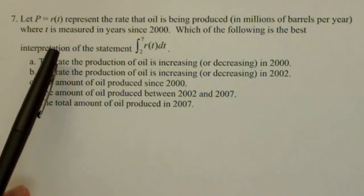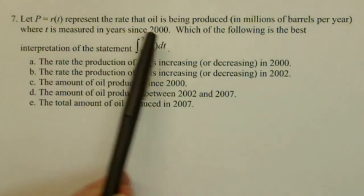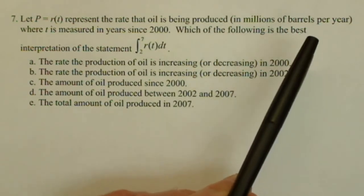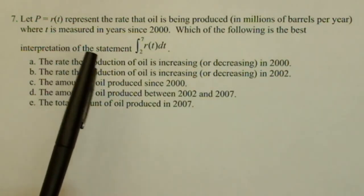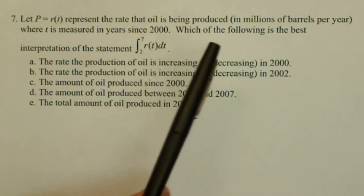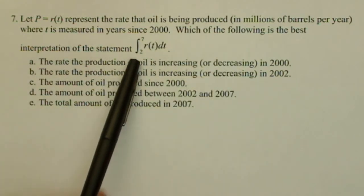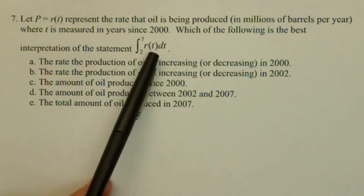Let P equal r of t be a function that represents the rate oil is being produced in millions of barrels per year, where t is measured in years since 2000. We're going to figure out what is the best interpretation of the definite integral from 2 to 7 of r of t dt.